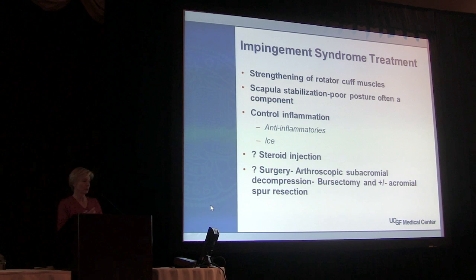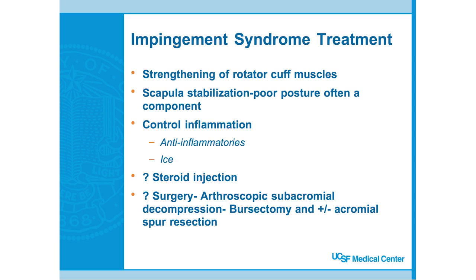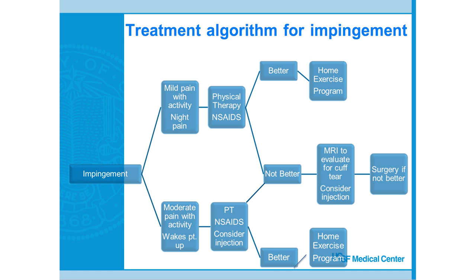I generally will order an MRI before I give a cortisone shot because I want to make sure I'm not missing a small cuff tear that's not showing up on exam. If patients fail all modalities, we'll consider a subacromial decompression — removing the inflamed bursa and possibly resecting an acromial spur. But generally with good therapy, people improve and don't need surgery. The algorithm: physical therapy and anti-inflammatories first, then consider a cortisone shot, get an MRI if no improvement, and surgery if PT fails.